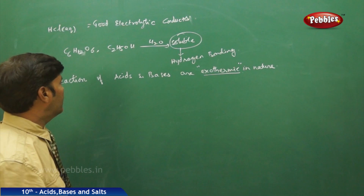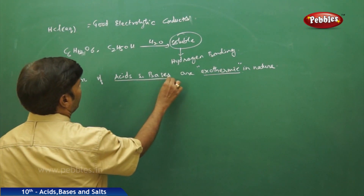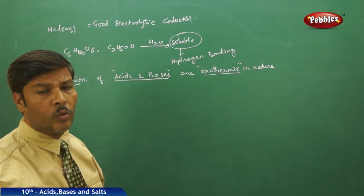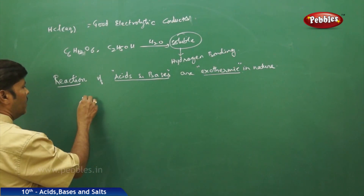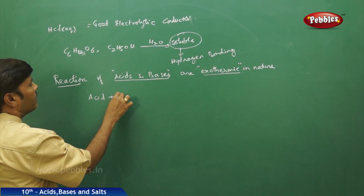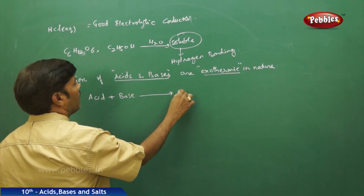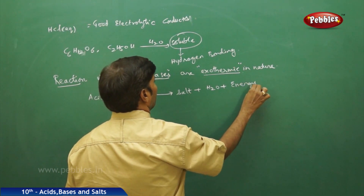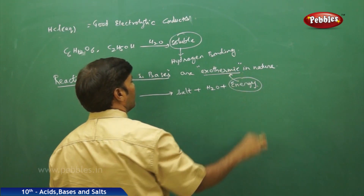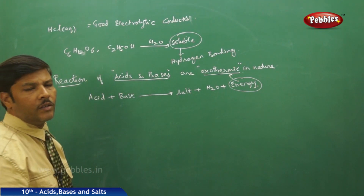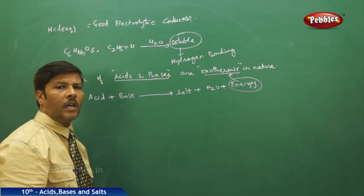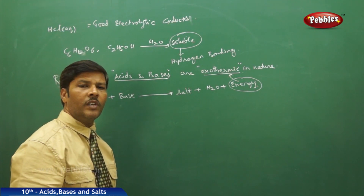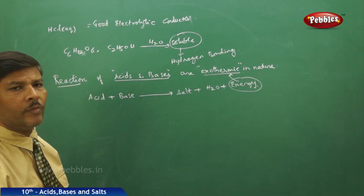The next topic is the reaction of acids and bases, which is exothermic in nature. As we have studied in neutralization reactions, when an acid reacts with a base, it gives salt and water plus energy. This release of energy means that the neutralization reaction is an exothermic reaction — all neutralization reactions release a large amount of energy depending upon the type of interaction between the acid and base.